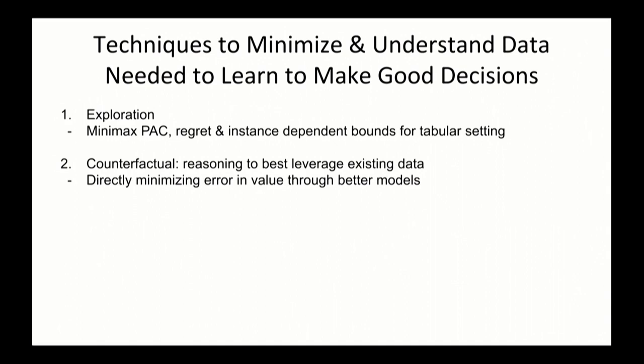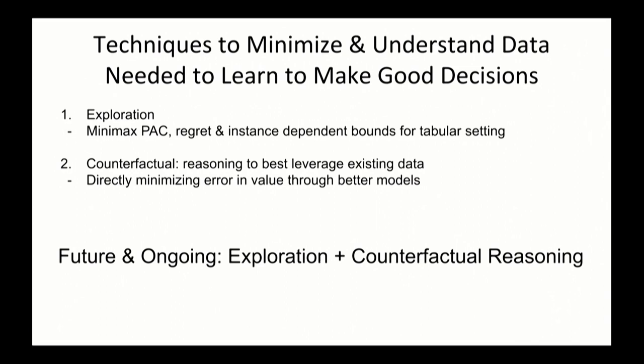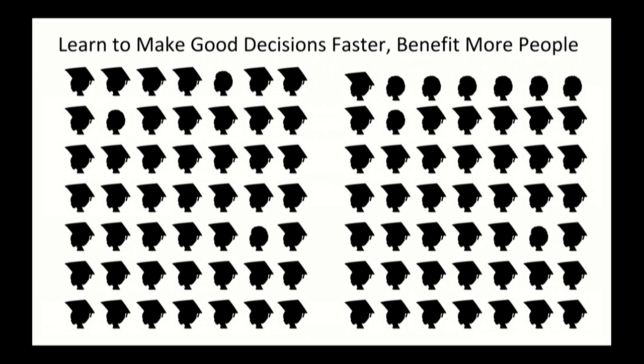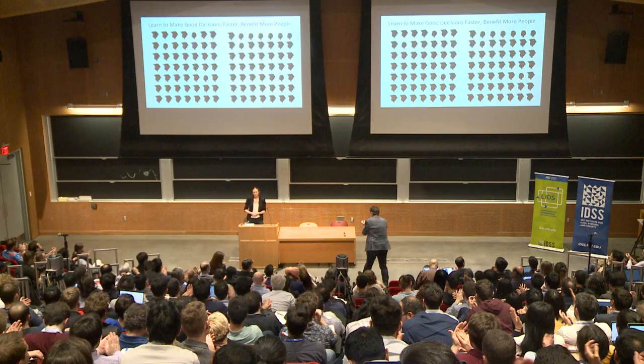So just to summarize, in my group I'm really interested in how we can effectively learn what works and why it's hard to learn to make good decisions. I think that exploration and counterfactual reasoning are two of the keys for that. And one of the things I'm really excited about going forward is how do we combine these two insights? How do we better leverage the prior data in an online learning setting? Because I think if we can do this we could substantially benefit a lot more people. Thank you.